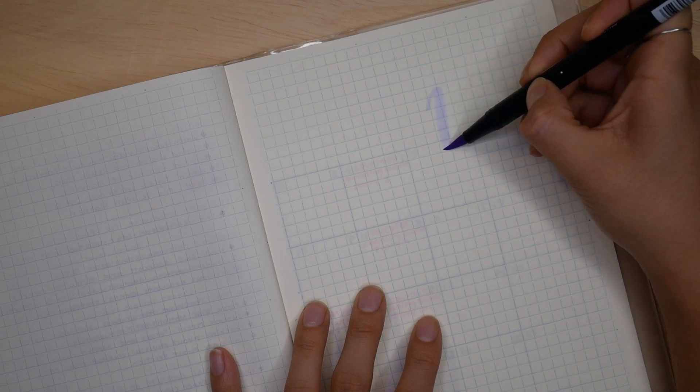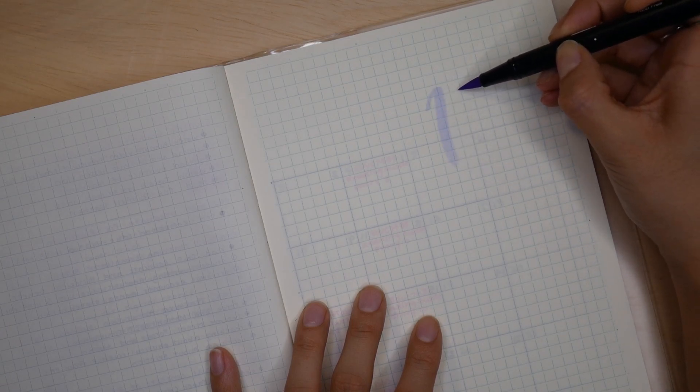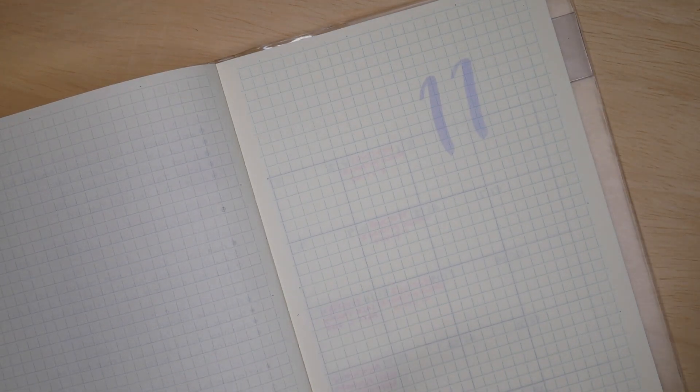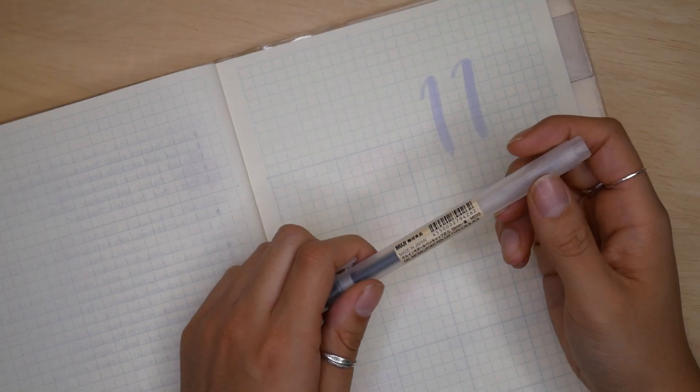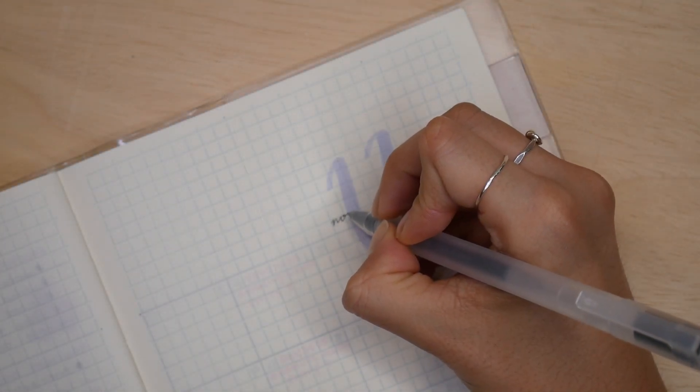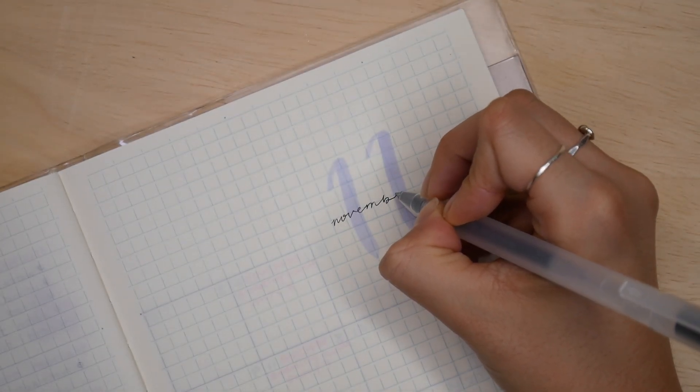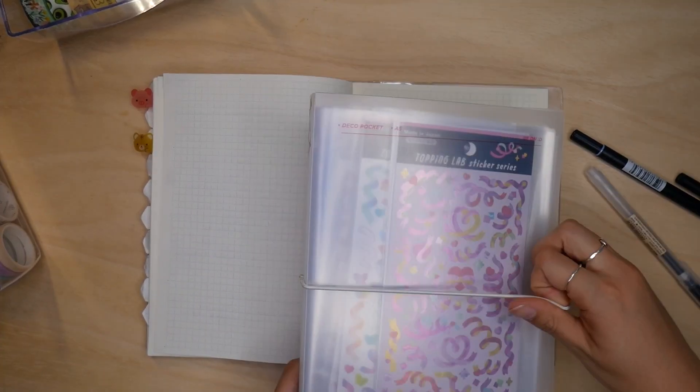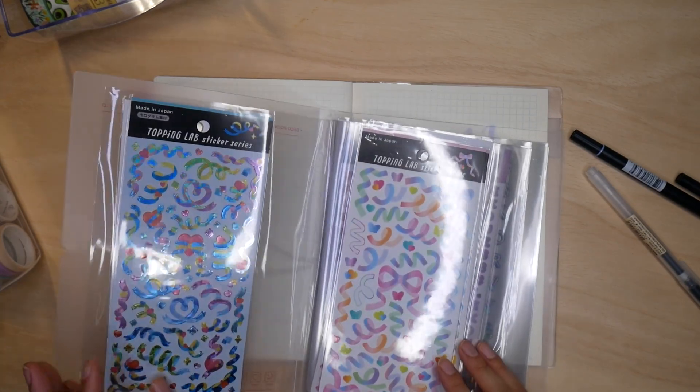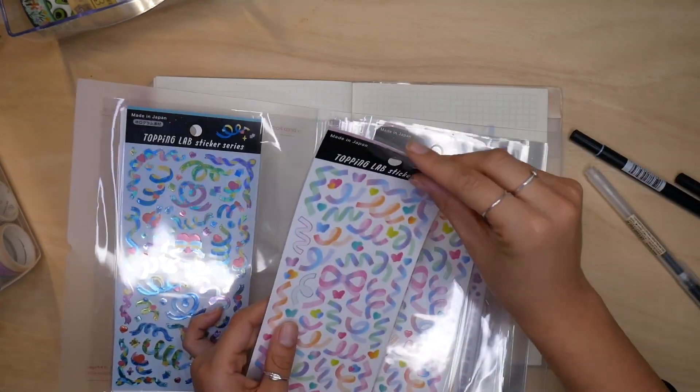Starting off my monthly cover, I'm using this baby blue color. You guys have seen this monthly cover setup before. I'm writing November across the 11 with my Muji 0.38 gel pen, and then I'll jazz things up a little with some stickers, and that's about it.